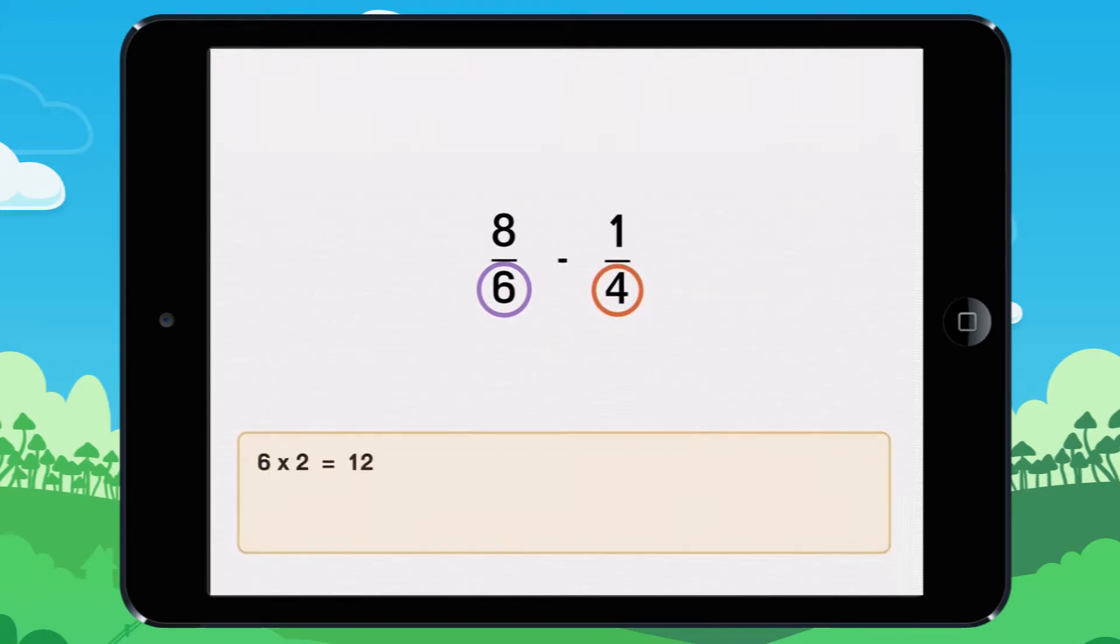6 times 2 equals 12, and 4 times 3 equals 12. 12 is the lowest common denominator of 6 and 4.